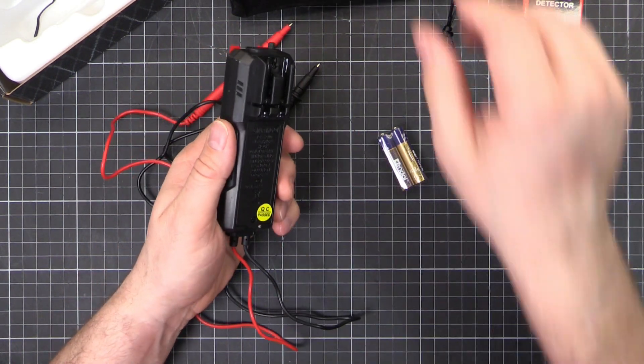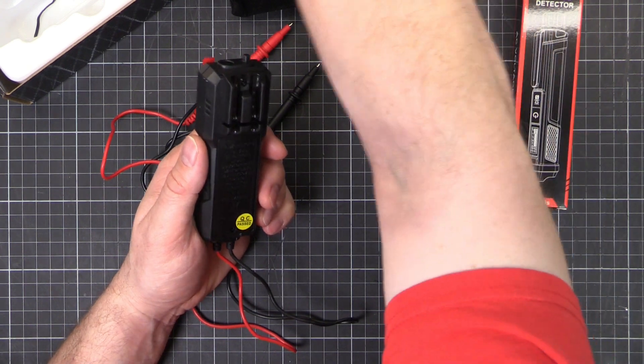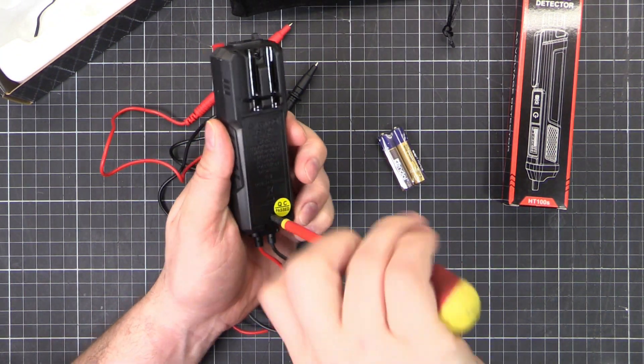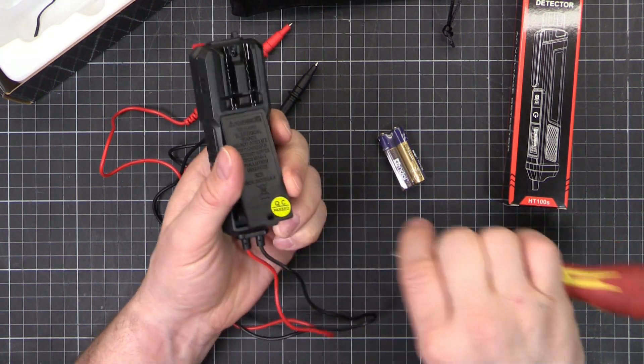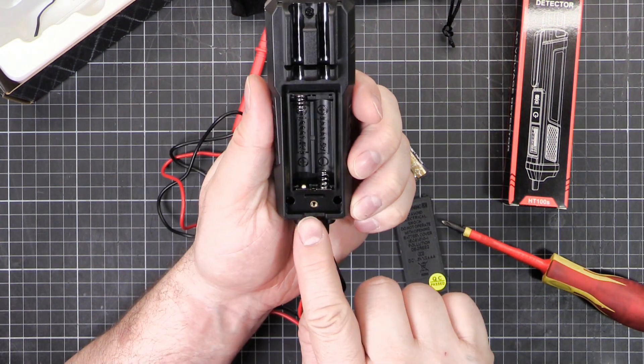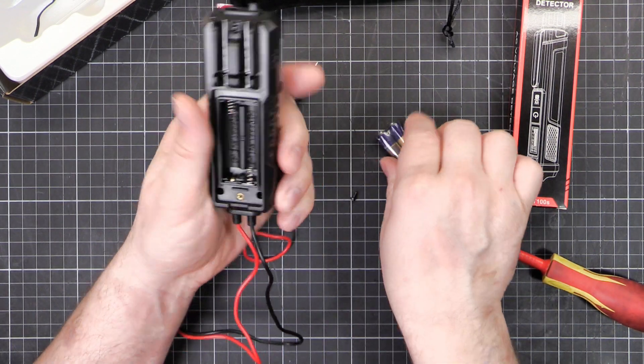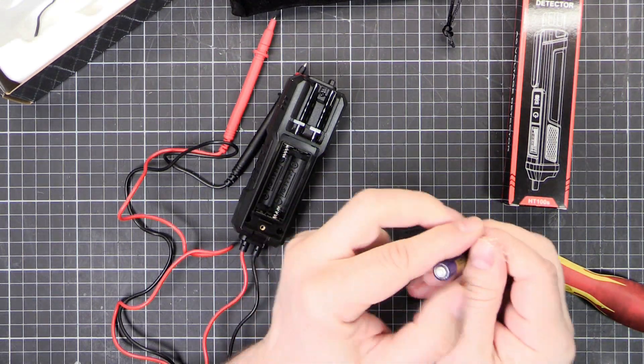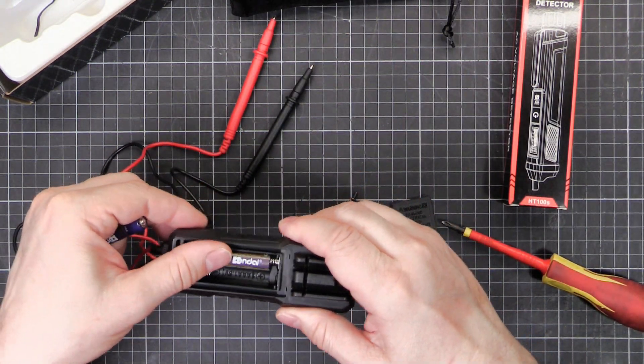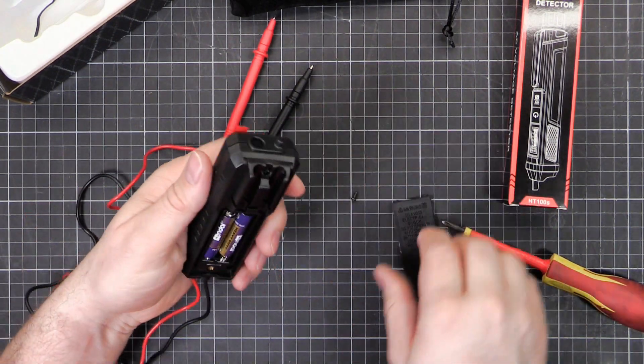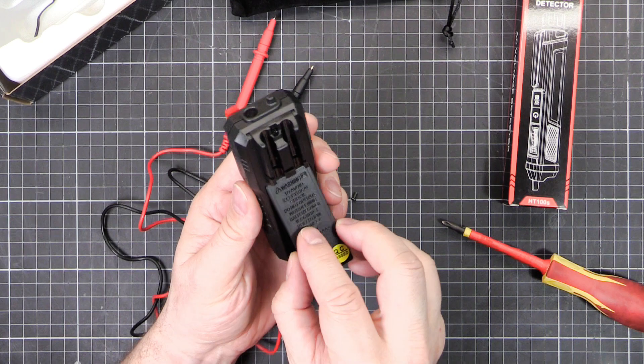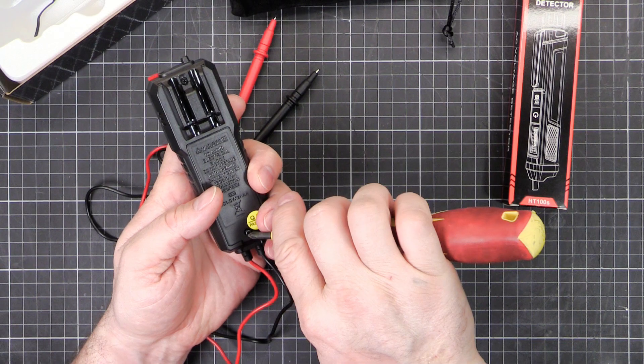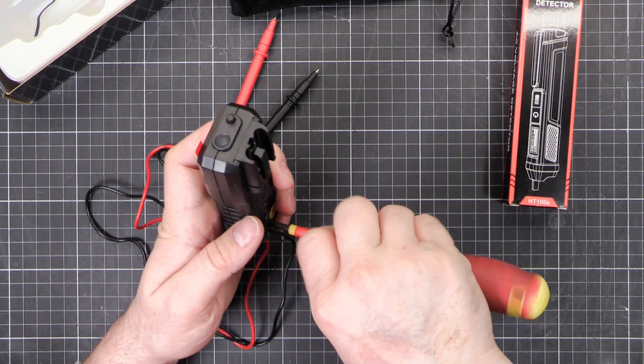So let's put the batteries in. Got the QC pass sticker on the back, so you know everything's going to be okay. A brass insert there for the thread for the battery door, that's nice. So it's less likely to strip out over time as you change your batteries. It's always a nice little touch. We're on auto. So I'll put that back together. Safety first.